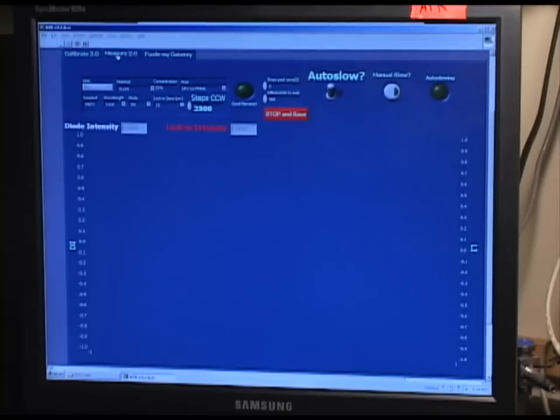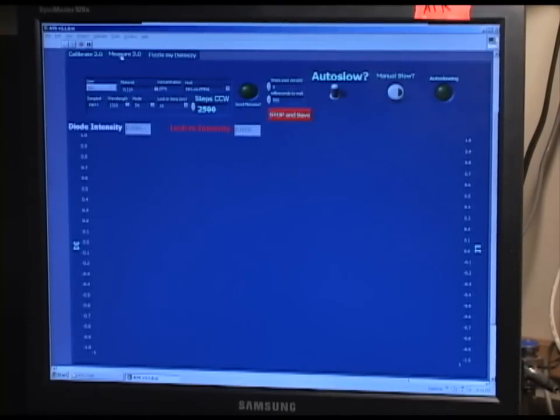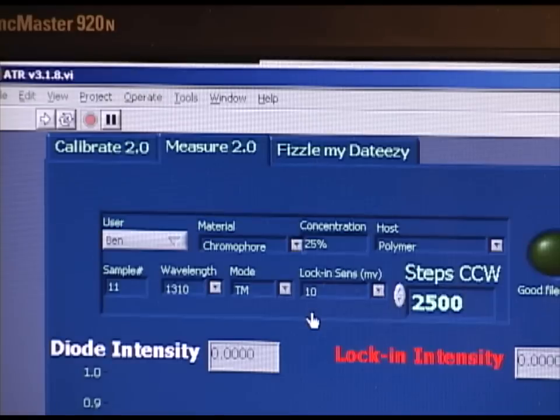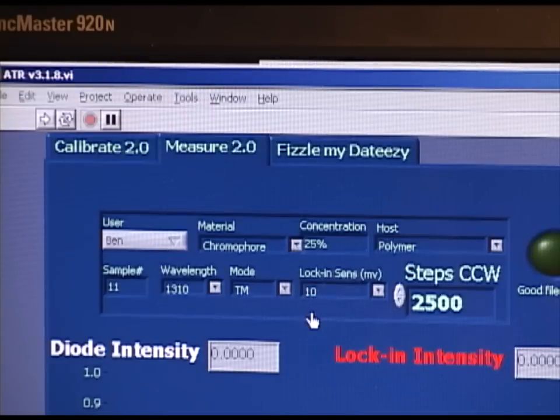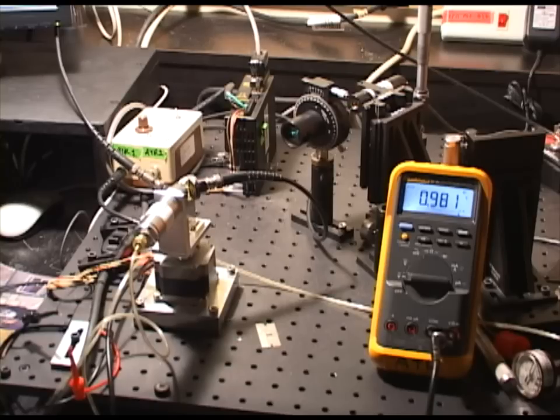Once the sample has been properly calibrated to achieve maximum signal, we want to move to the measurement frame of the program. Do this by clicking on the Measure 2.0 tab. It is now important to zero the sample or set it to its zero angle. To zero the sample, we can scan across a full range of angles to find the zero dip in reflectance or we can align the incident laser with the reflected laser out of the prism.